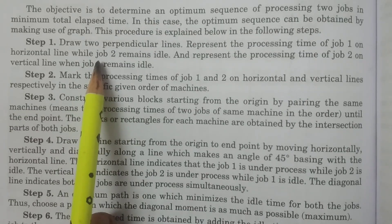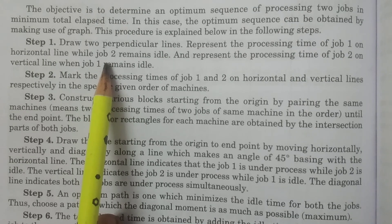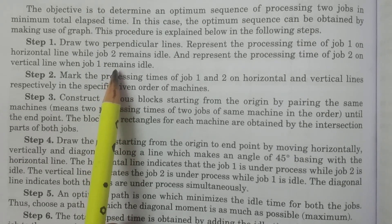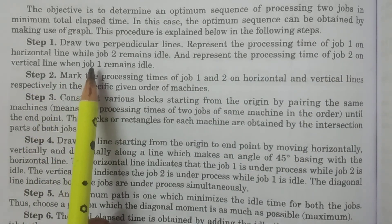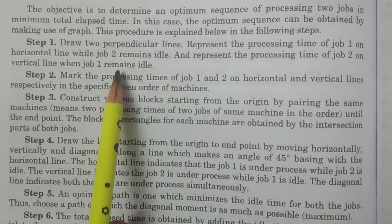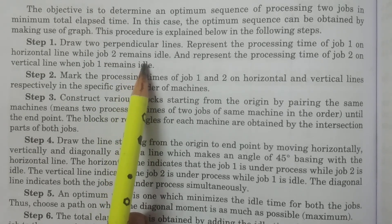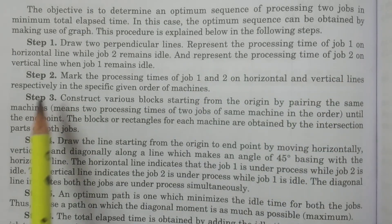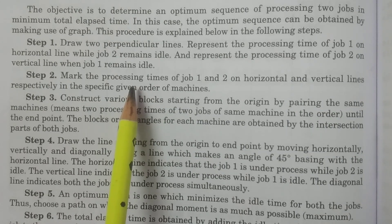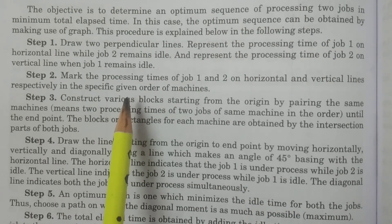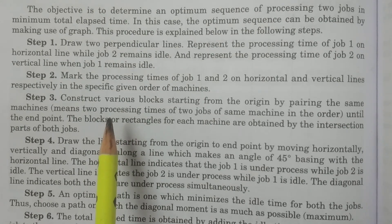Consider the processing times represented on two perpendicular lines — that is, in a graph, consider the x-axis and y-axis. Represent the processing times of job one on the horizontal line, while job two remains idle. Represent the processing times of job two on the vertical line, while job one remains idle.